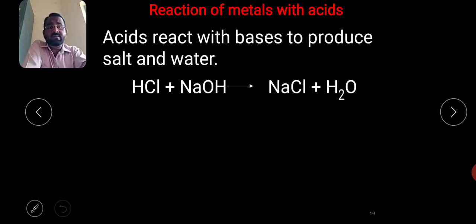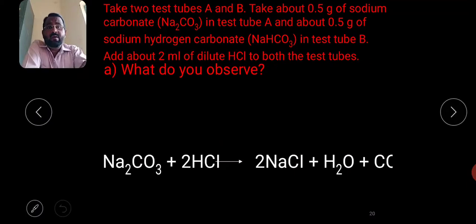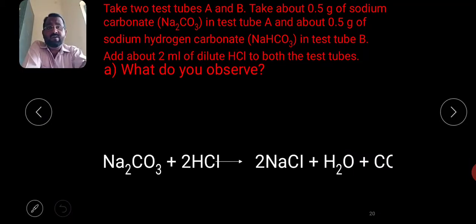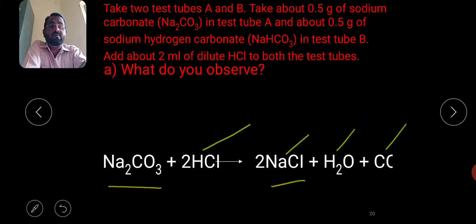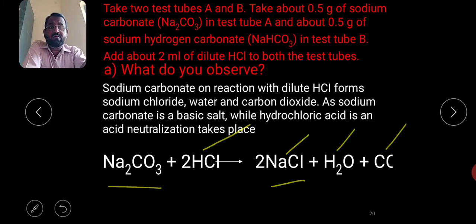When an acid reacts with a base, it gives salt and water — this is a neutralization reaction. Experiment: Take 0.5 g of sodium carbonate in test tube A and 0.5 g of sodium hydrogen carbonate in test tube B, then add 2 ml of dilute hydrochloric acid to both. Sodium carbonate with hydrochloric acid gives sodium chloride, water, and carbon dioxide. As sodium carbonate is a basic salt, neutralization takes place.